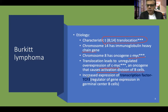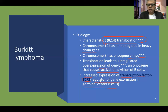Increased expression of transcription factor TCF3 has been found in the majority of cases of Burkitt lymphoma. TCF3 is believed to be a regulator of gene expression in germinal center B cells, and its increased expression arises from the translocation, causing increased proliferation of germinal center B cells.